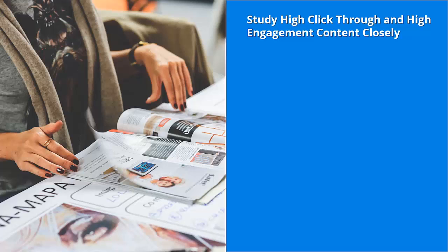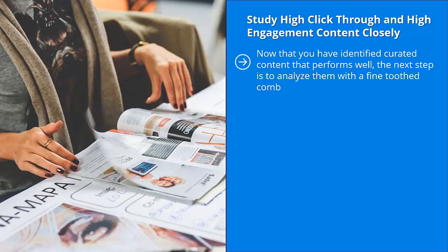Study high click-through and high engagement content closely. Now that you have identified curated content that performs well, the next step is to analyze them with a fine-toothed comb. Ask yourself: what problems are people interested in when they read this piece of content? How are these pieces of content positioned or presented? Do they use some sort of emotional headline? Do they use subheadings that ask questions? Do they drag the person along, or do they just lay out the information dead center? Pay attention to cosmetic issues — people do judge a book by its cover, and blog posts and articles are no different. How are these materials formatted? Do they have big pictures, header pictures? Do they use diagrams?